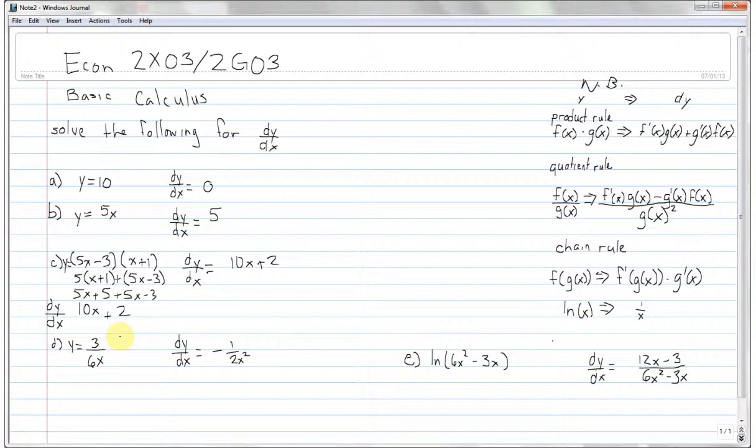So, for d, again, you can bring the 6x up to the negative 1, and this becomes product rule, or we can just use the quotient rule as I'd obviously intended. So, we're going to take the derivative of the top, right? f prime of x times g of x. So, the derivative of a constant is 0. So, just for pedagogical purposes, 0 times 6x minus the derivative of the bottom, g prime of x, times f of x. So, the derivative of the bottom is 6, right? Times 3. It's going to be 18.